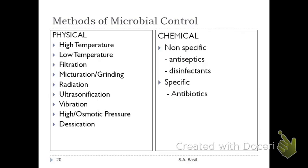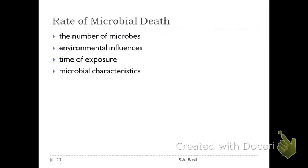There are two main methods of microbial control: the physical method and the chemical method. Tonight we will concentrate on physical methods. These include high or low temperature, filtration, micturation or grinding, radiation, ultrasonification using high-frequency waves/vibration, high osmotic pressure, and desiccation or removal of water.